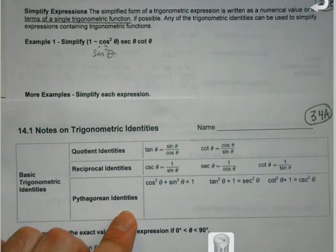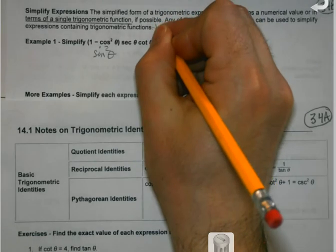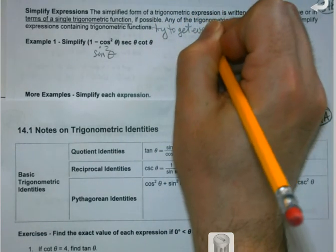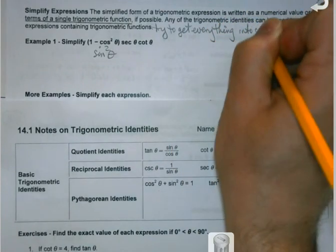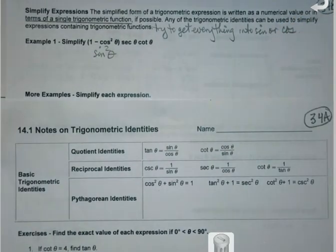I'm going to take that 1 minus cosine that we had before that equals sine squared and I'm literally going to change it into that value. Here's the other thing: we're going to try to get everything into sine or cosine. If it's secant, if it's tangent, cotangent, cosecant, whatever, if I can find a way to manipulate that into something that says sine or cosine that's going to help me.